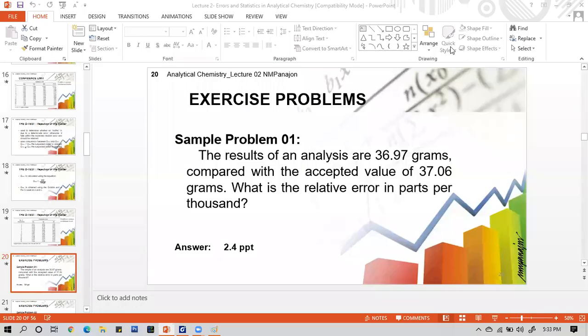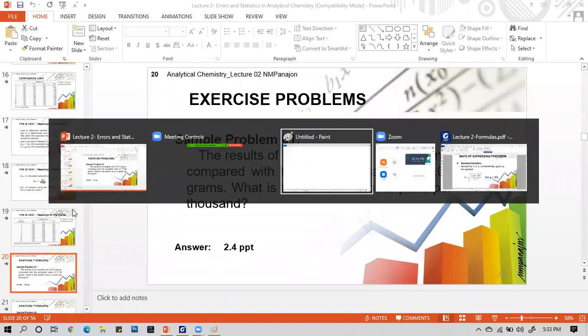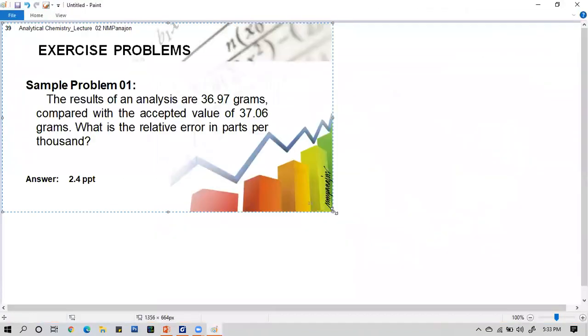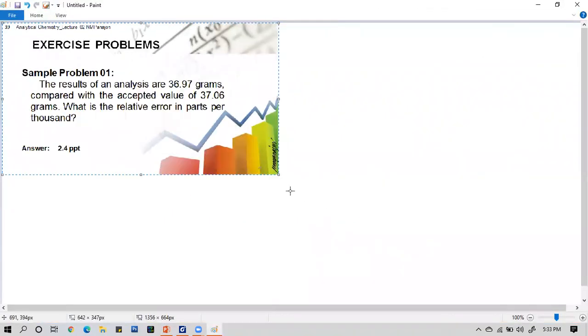Now, let's solve the following problems in our lecture 2. Consider this slide, slide number 20. These are exercise problems. The problem states: if the results of analysis are 36.97 grams compared with the accepted value of 37.06, what is the relative error in parts per thousand?